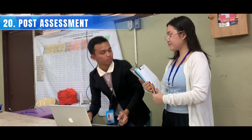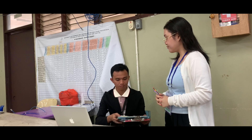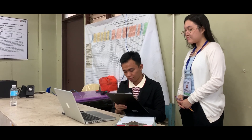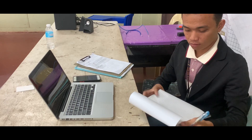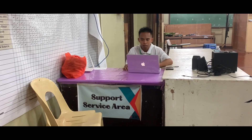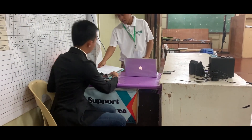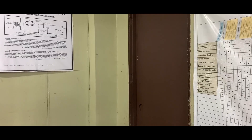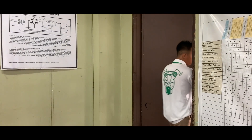Post Assessment. Submit to the Assessment Center Manager the assessment reports. The Assessment Center Manager will give the documents to the processing officer to accomplish the Registry of Workers Assessed and Certified (RWAC) and sign it. After accomplishing the RWAC, the processing officer will ask the assessor and the Assessment Center Manager to sign before passing it on together with the other documents to the TESDA representative. The TESDA representative will then deliver the documents to the designated TESDA office. Thank you so much for joining us.